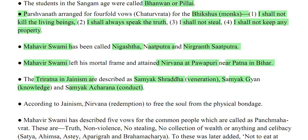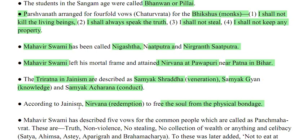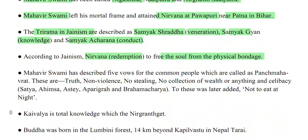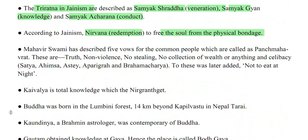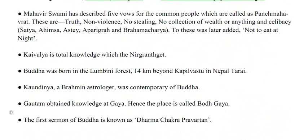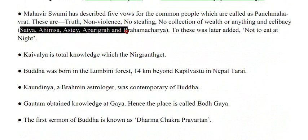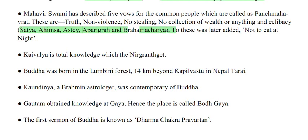According to Jainism, Nirvana means to free the soul from physical bondage. Mahavir Swami described five vows (Panch Mahavirat) for common people: truth (Sat), non-violence (Ahinsha), non-stealing (Astey), no collection of wealth (Aparigraha), and celibacy (Brahmachar). Brahmachar was added by Mahavira, and to these was added not eating at night.